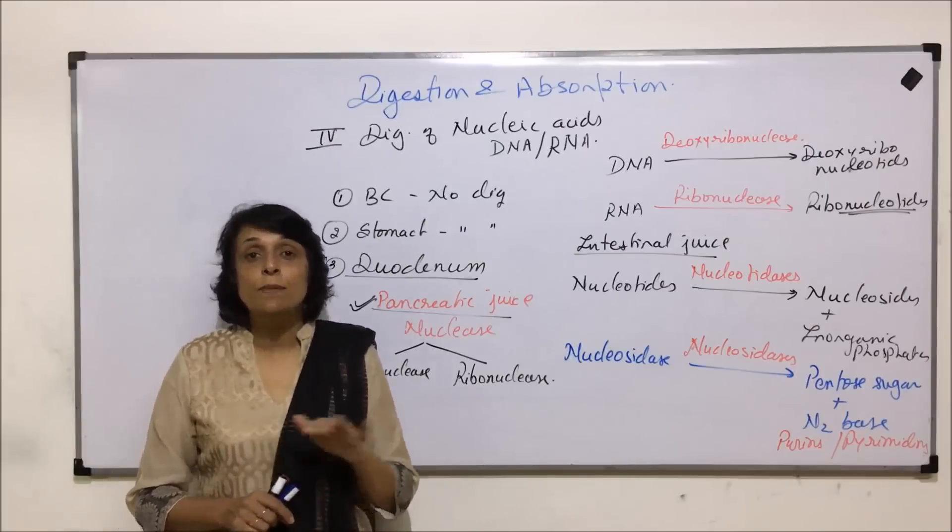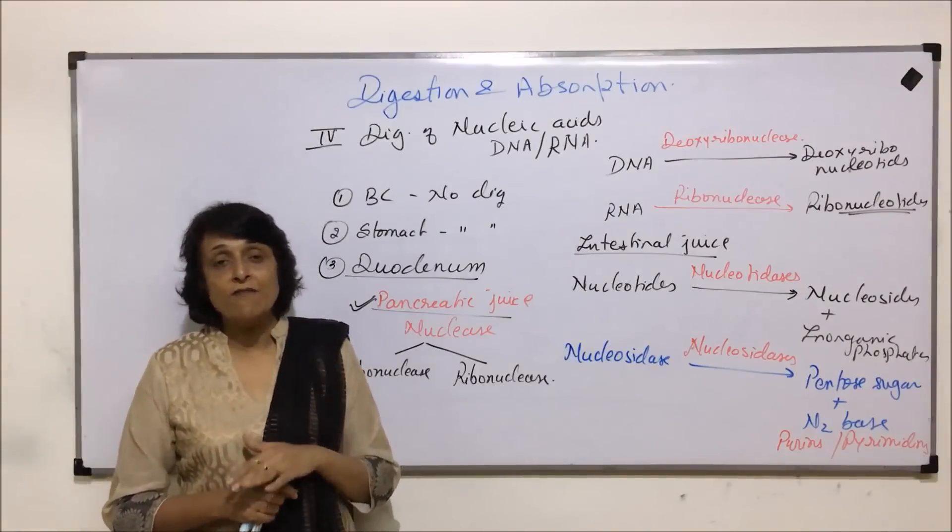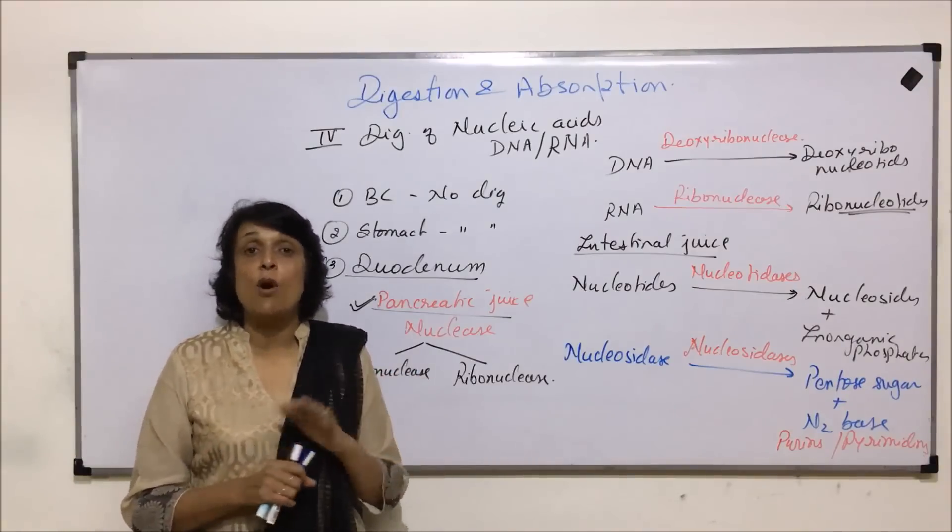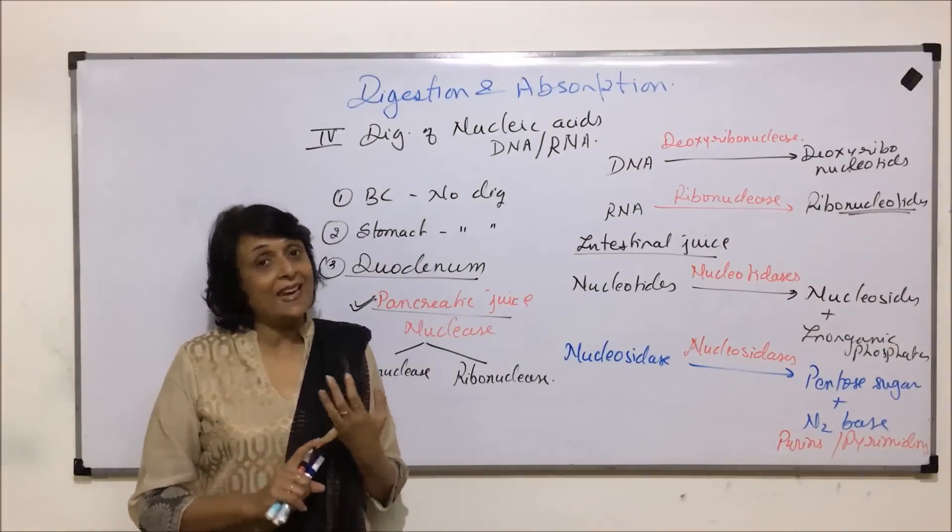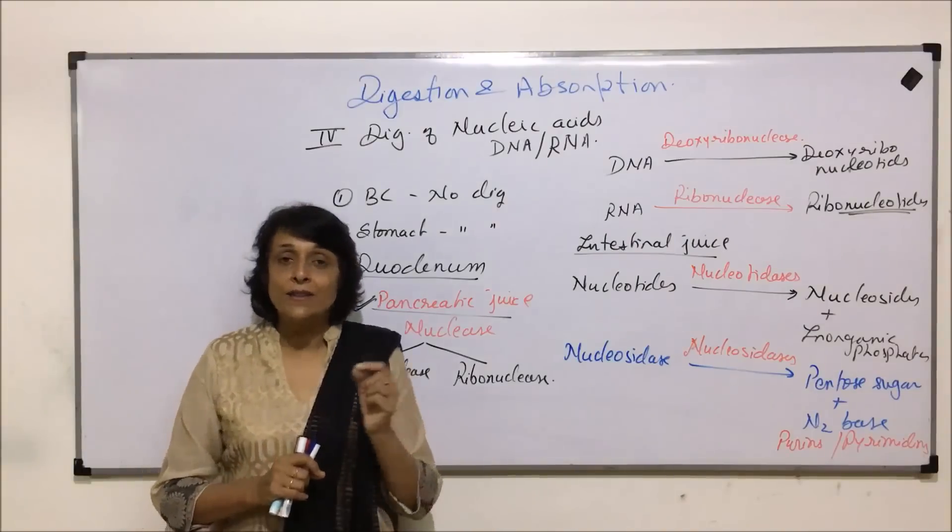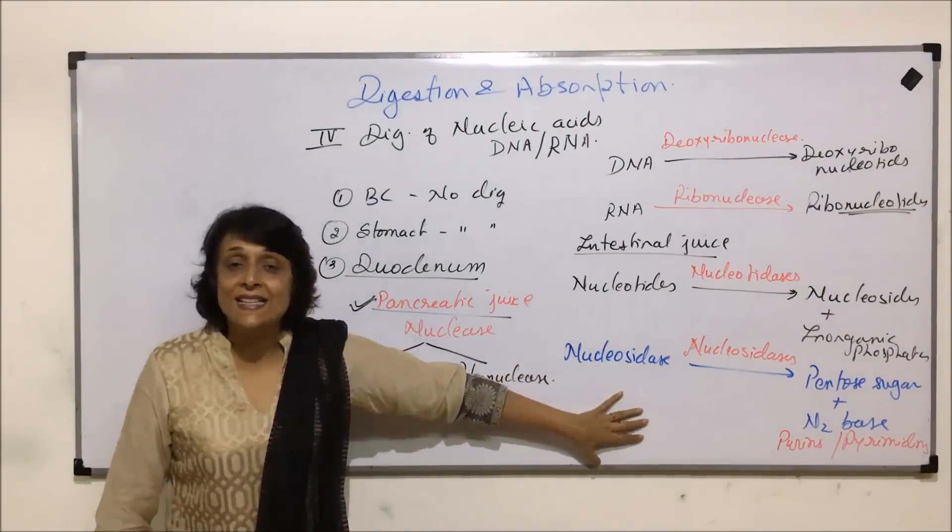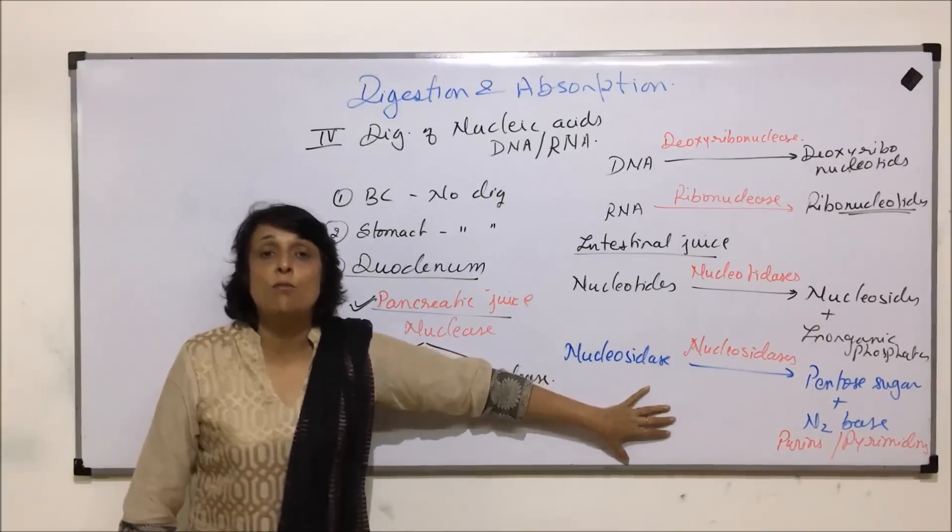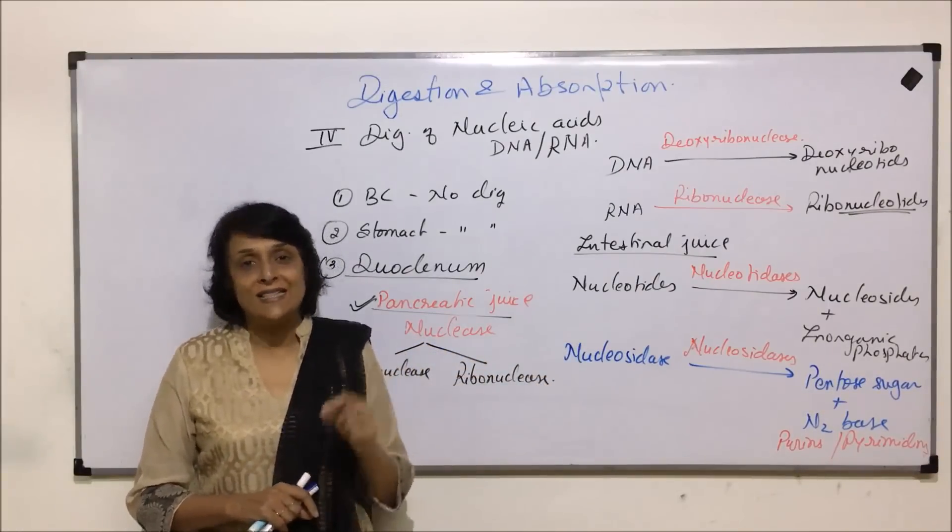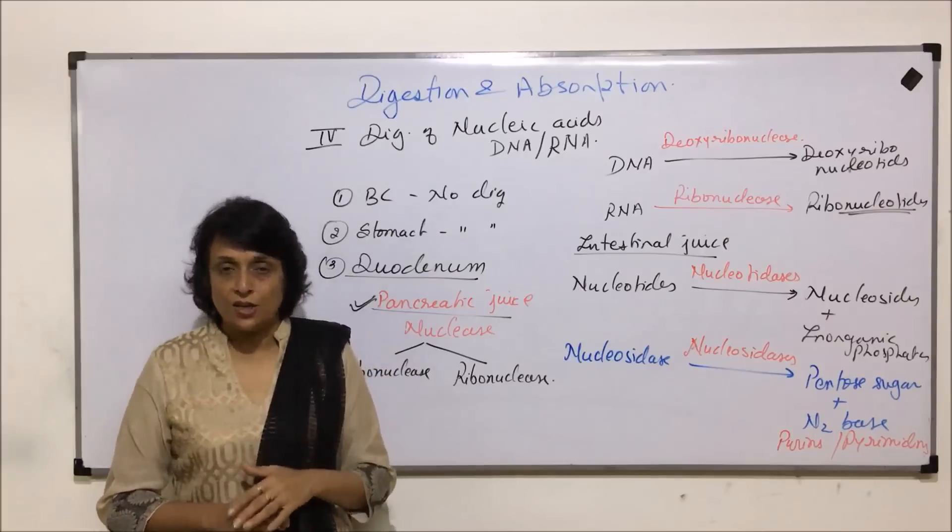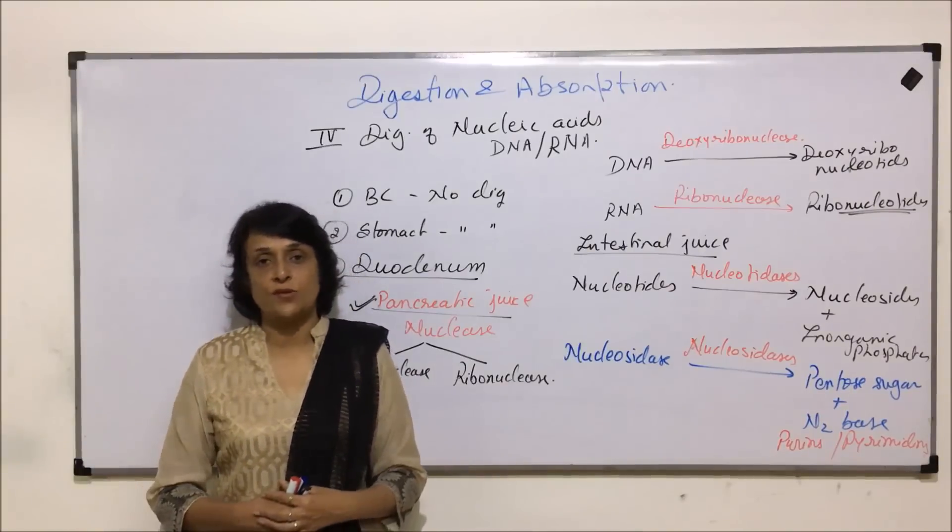So we have completed the process of digestion. In the five processes of complete digestive system or nutrition, there is ingestion, then digestion and absorption. So now in the next section we will talk about how these digested substances or simpler molecules are absorbed. After absorption we will talk about assimilation and then egestion. So from next section we will start with the absorption process.